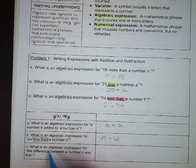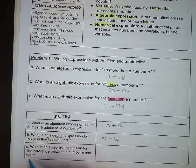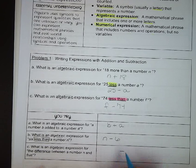Lastly, what is an algebraic expression for the difference between a number n and 5? And we see that word difference, we know we're talking about subtraction. So we've got our number n and 5.